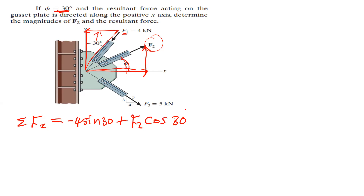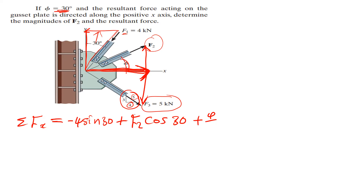Then we have F3, which is simply 5 kilonewtons. To find the x-component of F3, we move in that direction and then down, meaning we're also moving in the positive x. Since only the triangle sides are given, we take the x-side which is 4 divided by the hypotenuse 5, then multiply by 5 kilonewtons.